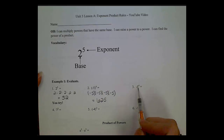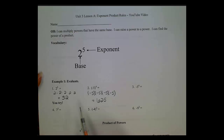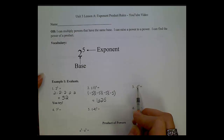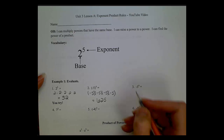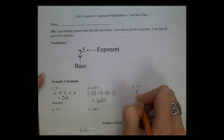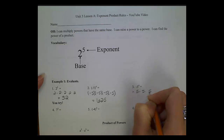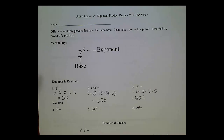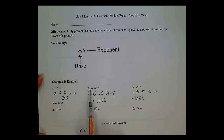Number 3 looks very much like number 2, but notice it does not have parentheses. This means we're taking 5 and raising it to the 4th power, and then putting a negative sign on that answer. Written out without exponents, this means negative 5 times 5 times 5 times 5, and that gives us negative 625. Notice how the negative sign makes a big difference, and we need to pay attention to those parentheses.